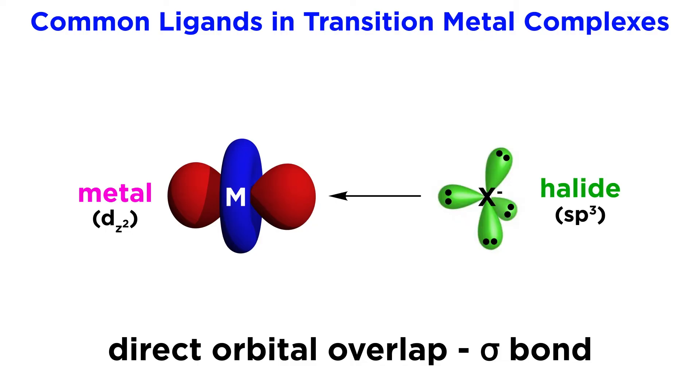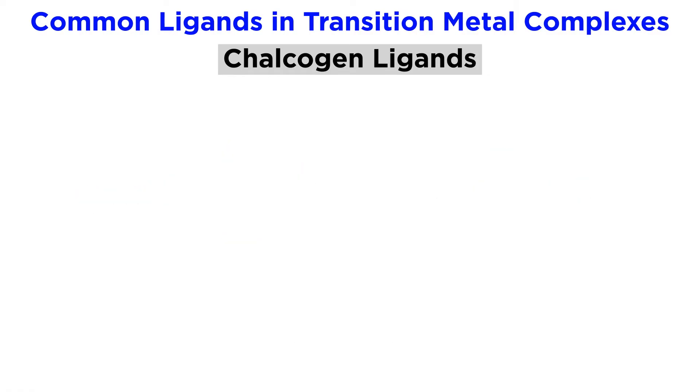The halide ions will all behave this way as well, though these have four pairs of valence electrons and are sp3 hybridized. One of these lone pairs will be donated to form the dative bond.